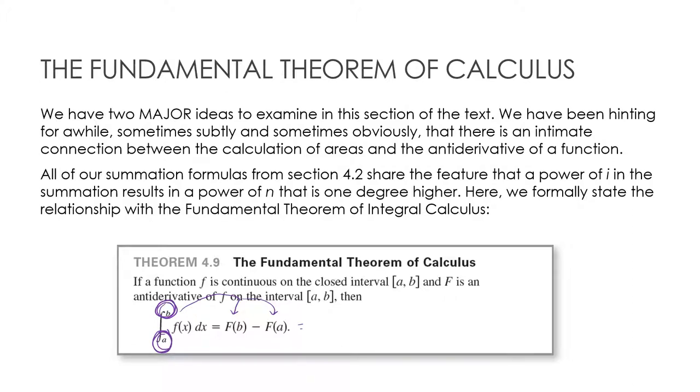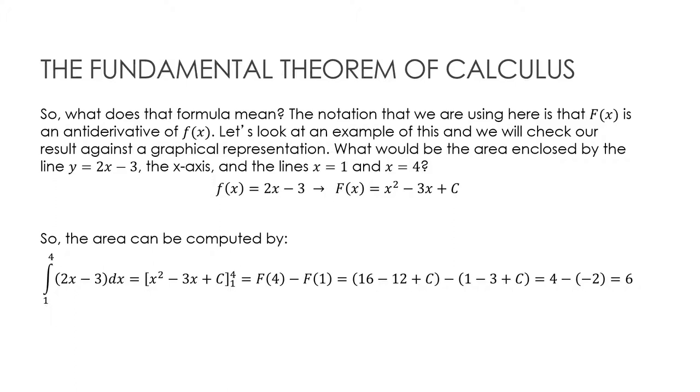So let's take a look. If I have the function f(x) = 2x - 3, and I'm trying to find the area enclosed by 1 and 4, in the past we would have had to find delta x and c sub i and do the limit definition, or graph this from 1 to 4. I'm not going to graph it because that's not how we're going to do things. What I'm going to do is find the antiderivative.